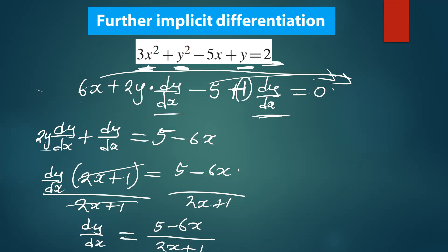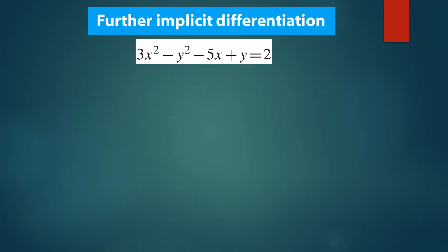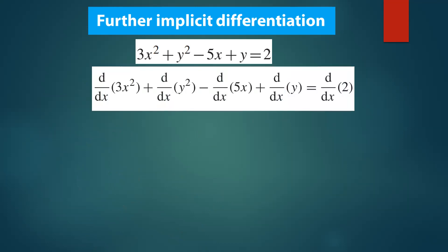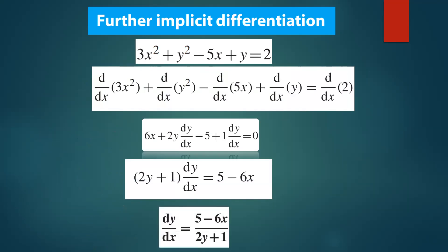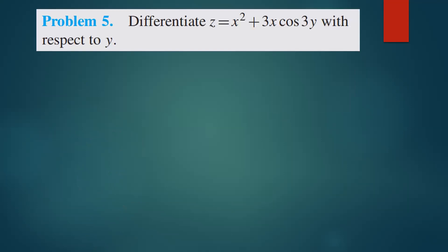A student asks for a correction — pointing out that it should be 2y rather than 2x in the factorized bracket. The instructor confirms: yes, it's supposed to be 2y here, not 2x. Thank you very much for that correction. This is how you do the differentiation using implicit functions — it's very simple.